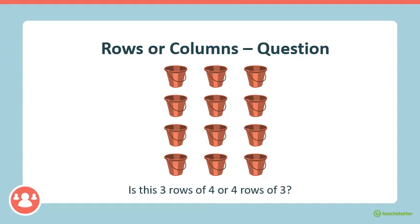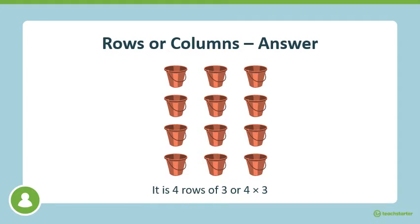Have a look at this array. Is this three rows of four or four rows of three? That's right, it's four rows of three. Four rows and three in each row. It is four rows of three, or four multiplied by three.